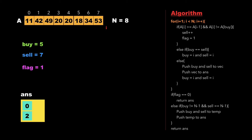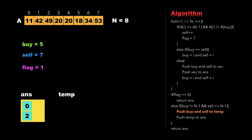Now i is out of the bounds of the array, so we exit the for loop and check whether flag is equal to 0. Since flag is 1, we go to the else part where we check whether buy is not equal to n-1, which is 5 not equal to 7, and also whether sell is equal to n-1. Since 7 equals 7, we create a vector temp, push the values buy and sell into it, and then push that vector into the answer vector. So finally we get the answer vector as (0, 2) and (5, 7).